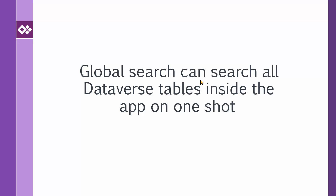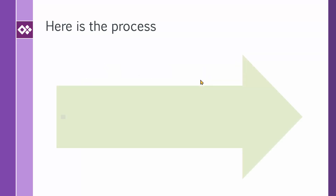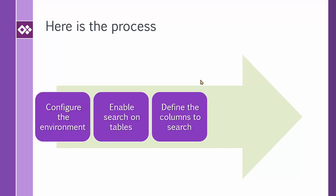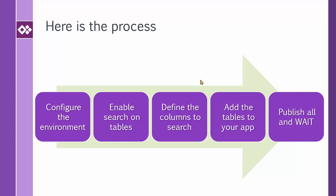Depending on how you configure the search — that's what this lecture is all about. The process starts by configuring the environment, then we need to enable search for the tables, then go inside the tables and decide which columns we want to search. Don't add all the columns because there are limitations. After that you need to add the tables to your app, and finally — the most important part — publish all and wait. Give it some time and be patient.